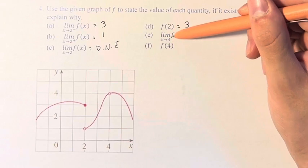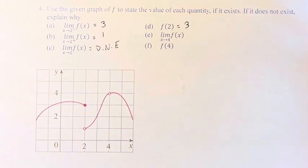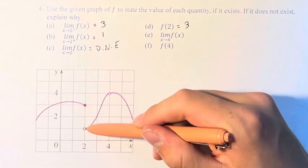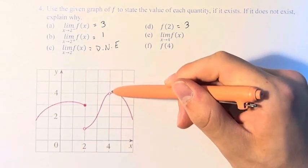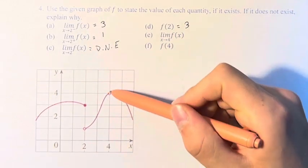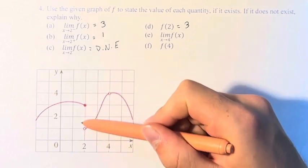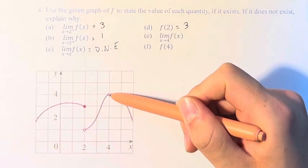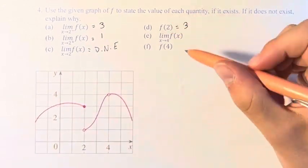The limit as x approaches 4 of f of x, this means x equals 4 is right here. The function is approaching this point right here from both sides, as opposed to here where it wasn't approaching a single point, but two points. Here, both directions are coming together to this point, which has a y value of 4.